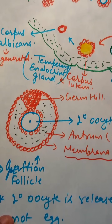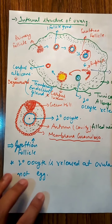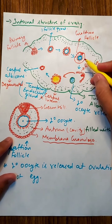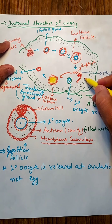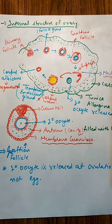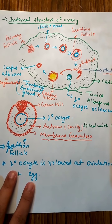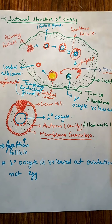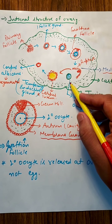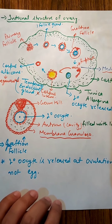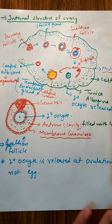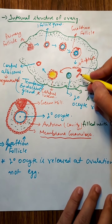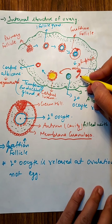In the Graafian follicle, there is a secondary oocyte — it is not an egg, it is a secondary oocyte. On maturation of this Graafian follicle, the follicle will rupture and the secondary oocyte will be released out from the ovary.